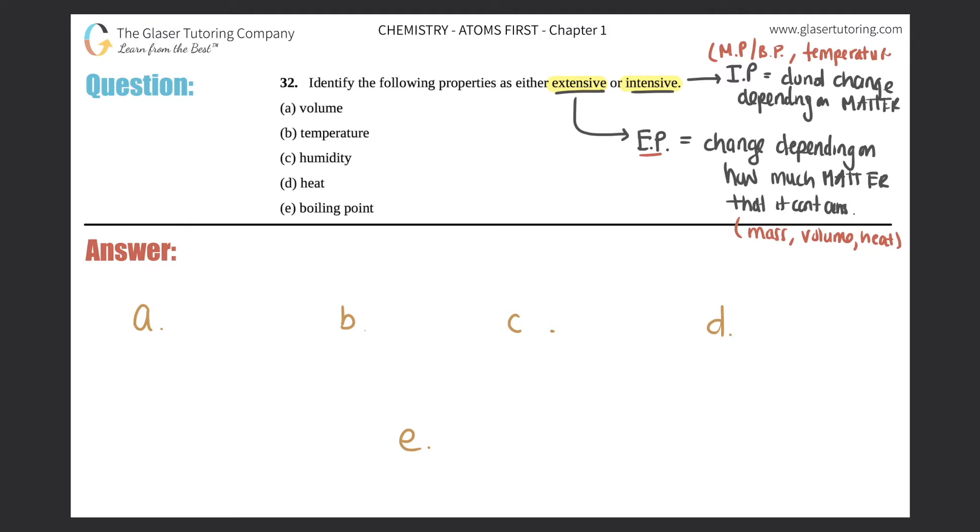Now let's get into it. A: volume. Does the volume change depending on how much you have of a substance? Absolutely. You can have large volumes and small volumes of a specific substance. Since it changes depending on the matter, this is an extensive property.